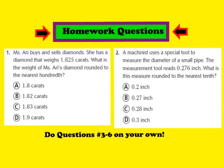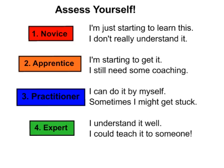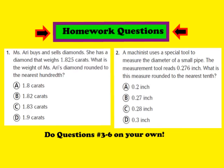For tonight's homework, please complete question number 1 and question number 2, along with numbers 3 through 6, found in your GoMath workbook on page 60. Don't forget, somewhere on your homework page, let me know if you feel like you're a number 1 novice, number 2 apprentice, number 3 practitioner, or number 4 expert. I hope you have a great evening, and we look forward to seeing you at school tomorrow.